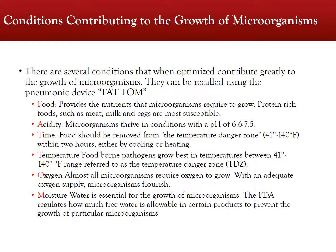Next are time and temperature. Foodborne pathogens grow best in temperatures between 41 and 140 degrees Fahrenheit. This range is referred to as the temperature danger zone. When food is left for too long within this range, it becomes susceptible to pathogen growth. Almost all microorganisms require oxygen and moisture to grow. Limiting the amount of oxygen and water food is exposed to can greatly reduce microorganism growth. The FDA regulates how much free water is allowable in certain products to prevent the growth of particular microorganisms.